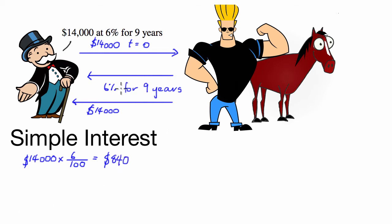So basically this 6% for nine years, we're going to have to pay him 9 lots of $840.